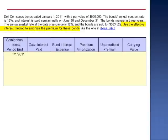We're asked to use the effective interest method to amortize the premium for these bonds. The effective interest method says that as the carrying value moves toward the par value, it does so at a constant rate of interest. The initial carrying value is equal to the selling price, $563,522. The carrying value minus the par value is the initial unamortized premium of $13,522.